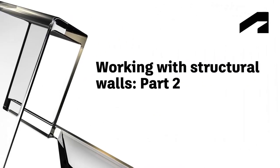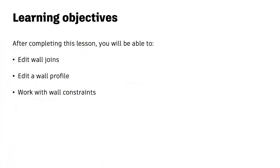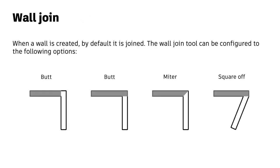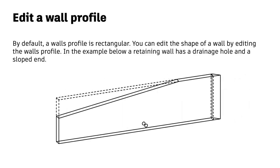After completing this lesson, you'll be able to edit wall joins, edit a wall profile, and work with wall constraints. The objective domain covered is 1.1C: work with structural walls. When a wall intersects another wall, Revit by default will join the walls together. Often you may want to change the way the wall joins — for example, if walls with unequal thicknesses need to be joined, the butt joint can control which wall takes priority.